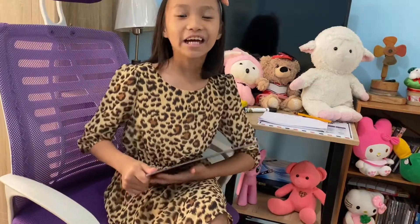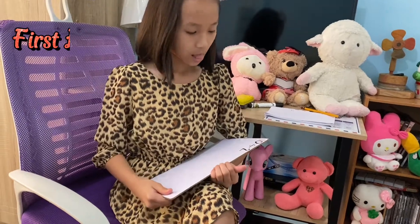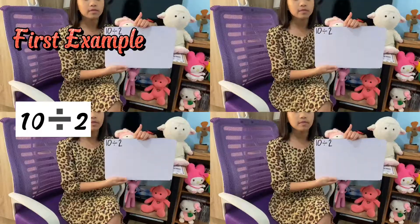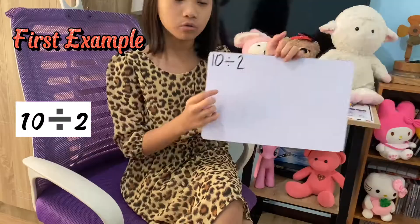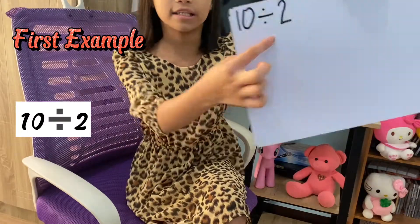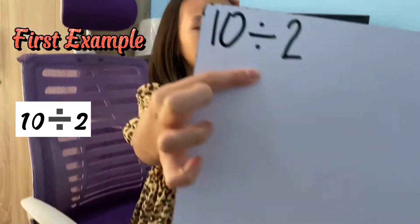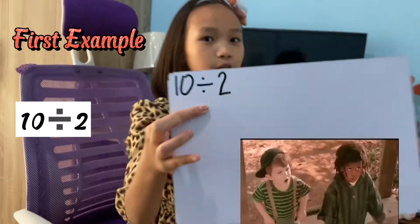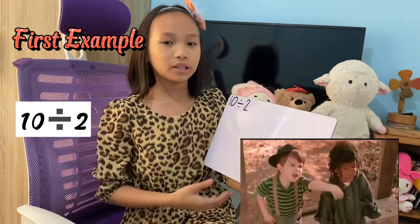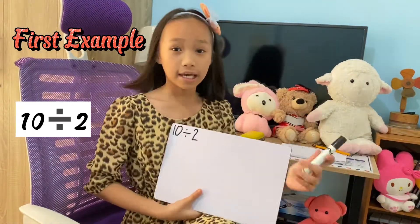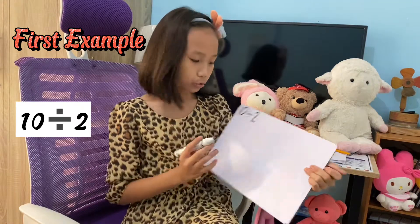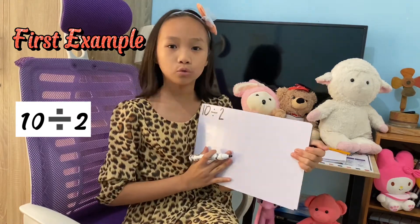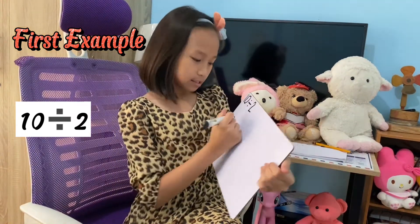So kids, this is our first example. Let's try 10 divided by 2. I forgot to tell you that this is the division symbol. So what we're going to do is get our pencil and we're going to get 10 lines.